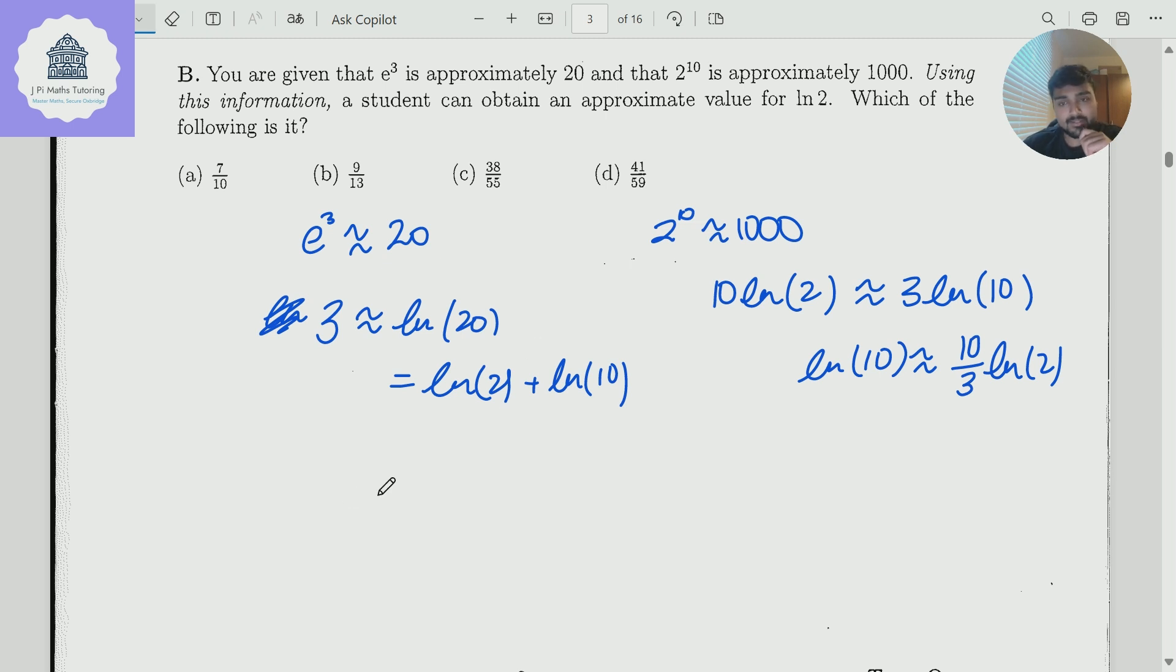Now I just need to combine both these. So I get 3 is approximately ln2 plus ln10. But ln10 is approximately 10 over 3 ln2. ln2 plus 10 over 3 ln2, that's just 13 over 3 ln2. And if I divide both sides by 13 over 3, I get 9 over 13. So ln of 2 is approximately 9 over 13.